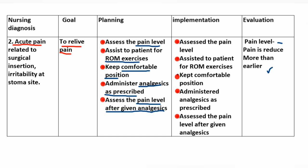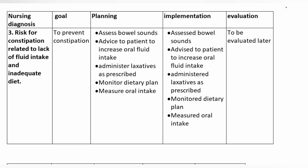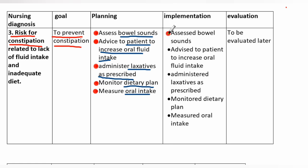Nursing diagnosis number three: risk for constipation related to lack of fluid intake and inadequate diet. Goal: to prevent constipation. Planning: assess the bowel sounds, advise the patient to increase oral intake, administer laxatives as prescribed, monitor dietary plan, measure oral intake. Implementation: assess bowel sounds, advise patient to increase oral intake, administer laxatives as prescribed, monitor dietary plan, measure oral intake. Evaluation to be evaluated later.